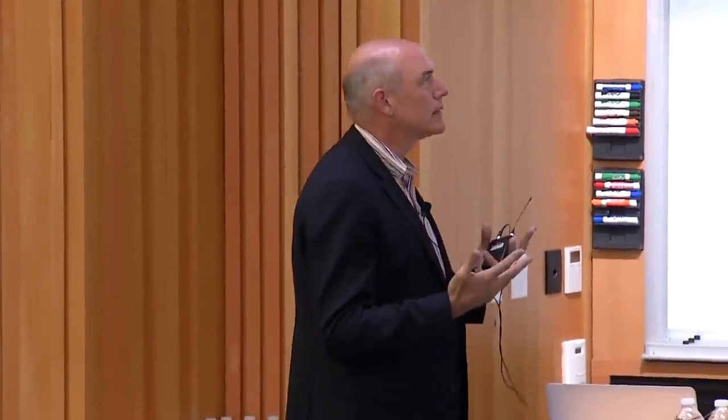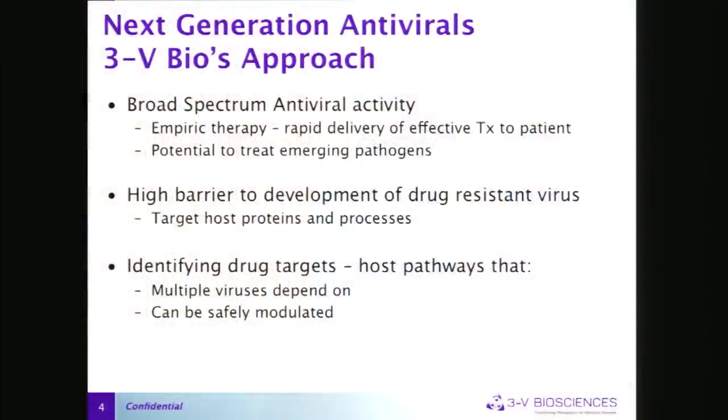We want to take a different approach and look for broad-spectrum antiviral activity. If someone comes into the ICU with a severe respiratory infection, if you think it's bacterial you give a broad-spectrum antibacterial. But if it's flu or RSV in December, right now there's nothing general you can give them for those two together. Our idea is: what if we had a respiratory virus drug? It doesn't have to be flu or RSV specifically — it could work for both.